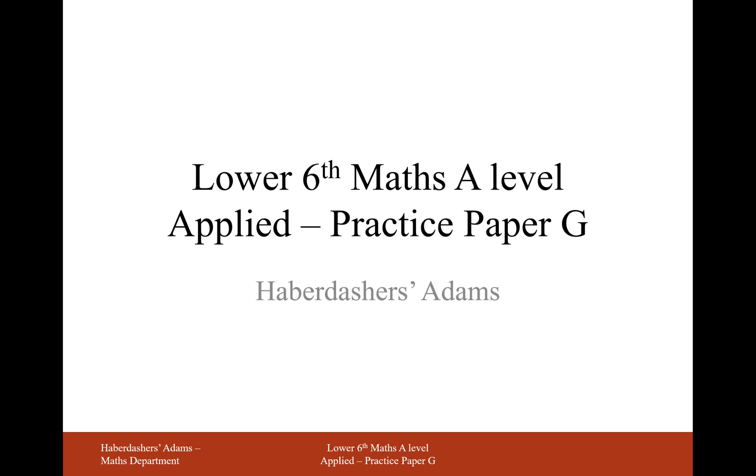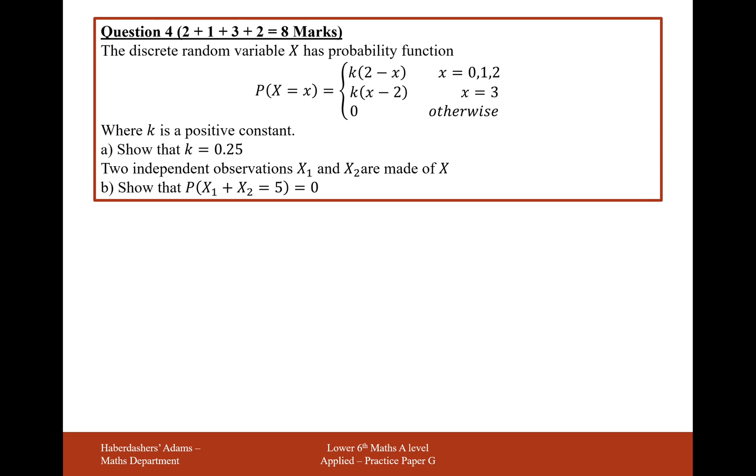Hello there and welcome to Loisic's Math Sale. This is the applied practice paper G and here we're on a discrete random variables question number 4. The discrete random variable X has a probability function of k times 2 minus x for x equals 0, 1, and 2, k times x minus 2 for x equals 3, where k is a positive constant. Show that k equals 0.25.